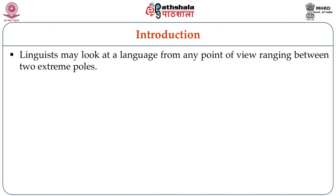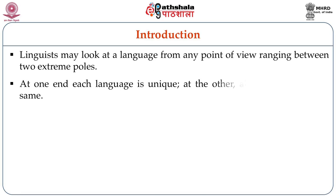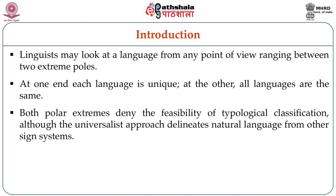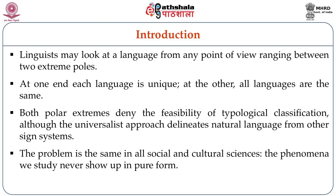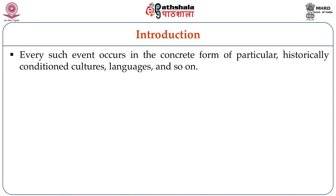Linguists may locate a language from any point of view, ranging between two extreme poles. At one end, each language is unique; at the other, all languages are the same. Both polar extremes deny the feasibility of typological classification, although the universalist approach delineates natural language from other sign systems. The problem is the same in all social and cultural sciences — the phenomena we study never show up in pure form.